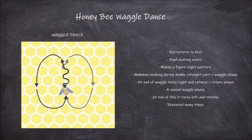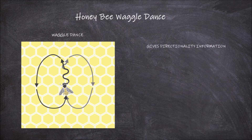This type of dance is used when the food source is further away from the hive. This type of dance provides a range of information to the other worker bees. The direction of the waggle phase gives information on the direction of the food source. This directional information of the food source is often given in relation to its position to the sun.